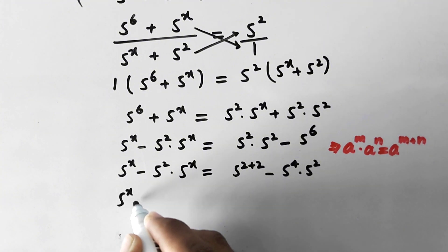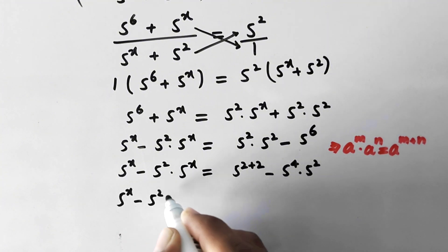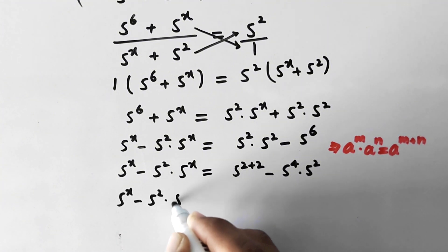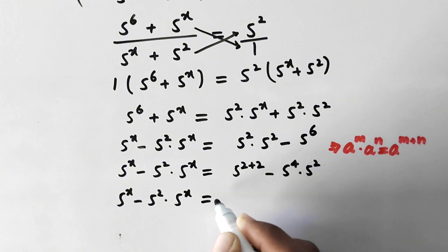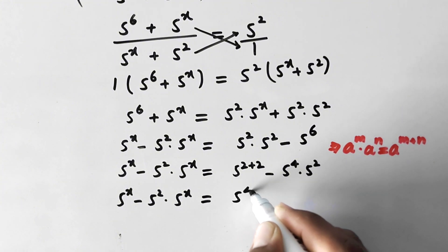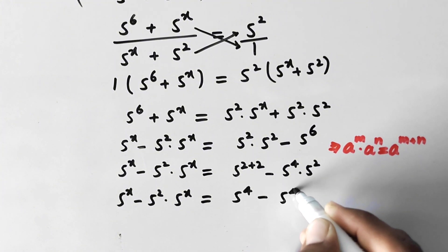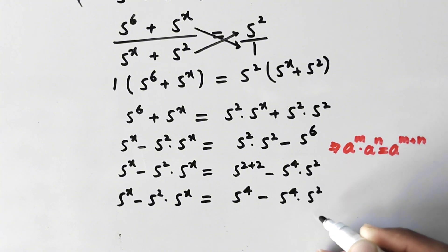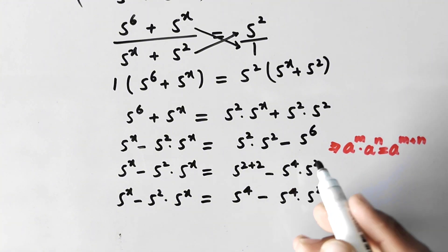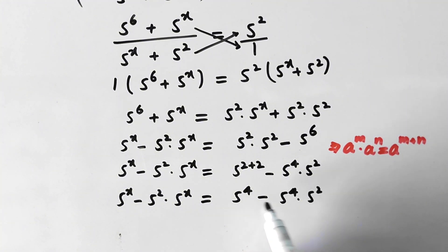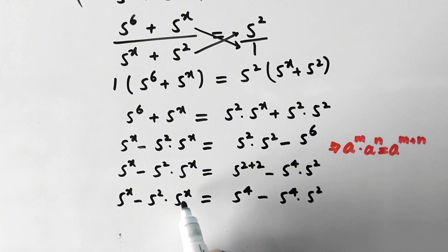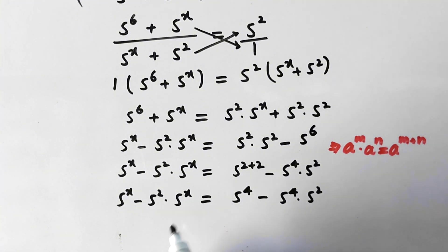So now we have 5 to power x minus 5 square times 5 to power x is equal to 5 to power 4 minus 5 to power 4 times 5 square. We can see that 5 to power 4 is common on the right hand side and 5 to power x is common on the left hand side, so we take each out as a common factor.